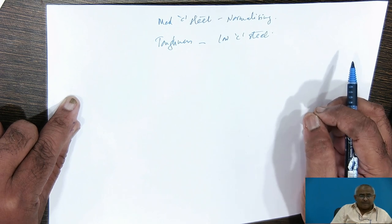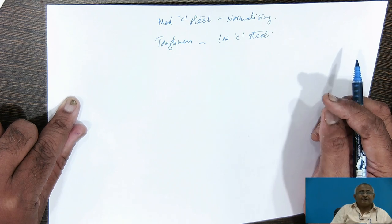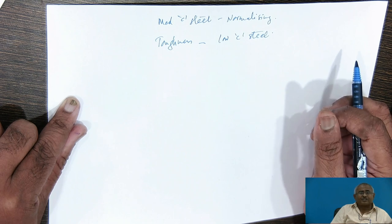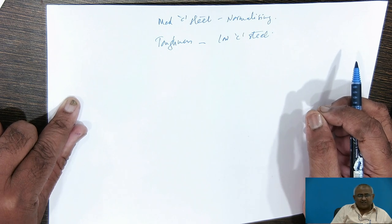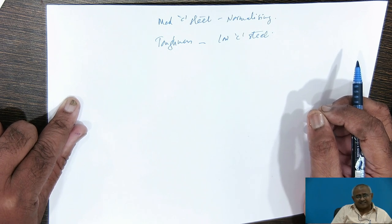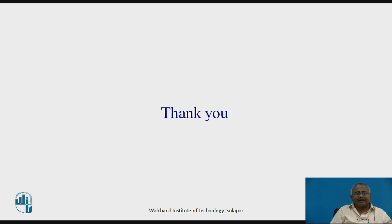In some cases, double normalizing is also employed to get a better set of properties. Friends, you should now understand the basics of normalizing and annealing. References include Material Science and Metallurgy by E.C. Rolason, and Introduction to Physical Metallurgy by Avner, TMH publication. Thank you, have a good day.